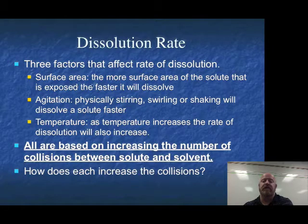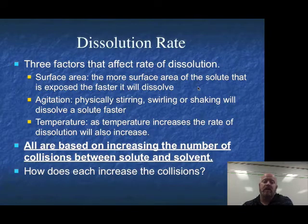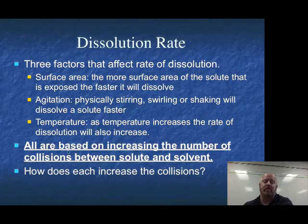The three factors are surface area, agitation, and temperature. For surface area, if you crush a substance and make as much surface area as possible, you have more spots for collisions to happen. More spots means more collisions, which means faster dissolving.